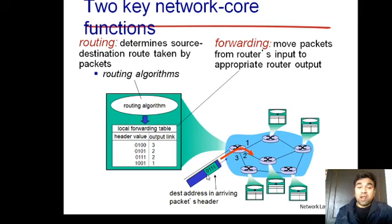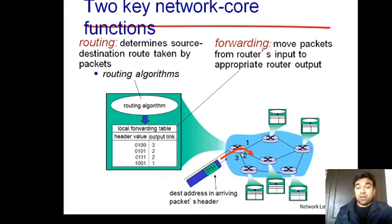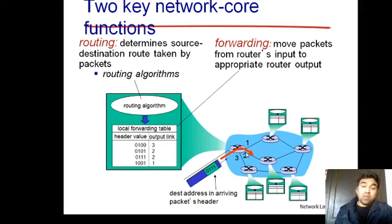Once you have the routing table, you can easily perform data forwarding. Forwarding means moving packets from a router's input port to the appropriate output port. When a packet arrives at serial port four, the router looks up the destination address in the routing table, finds serial port two as the output, and forwards the packet from port four to port two. Placing the packet from the input port to the correct output port is called packet forwarding.